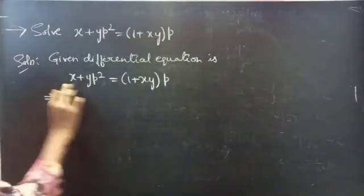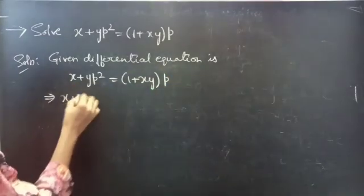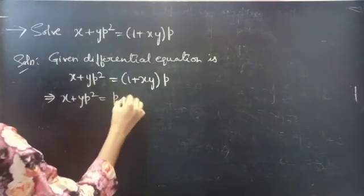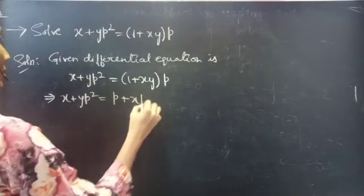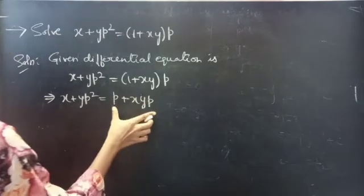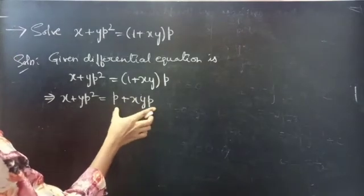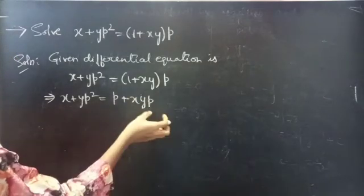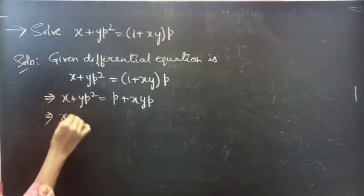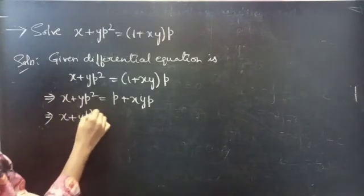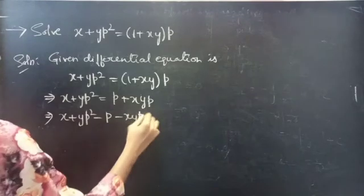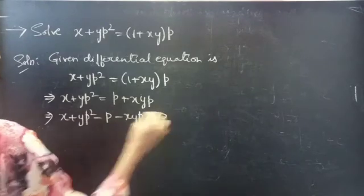We can rewrite this as x plus yp squared equals to p plus xyp. Taking these two terms to the LHS, we get x plus yp squared minus p minus xyp equals to 0.